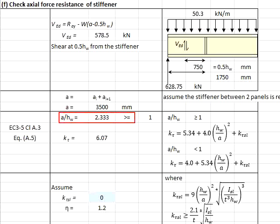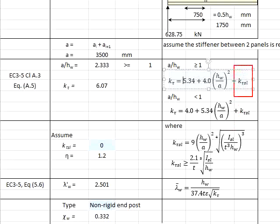We conservatively assume the stiffener doesn't contribute anything on here. Therefore, the k_ksl is considered to be 0.0. The k_knot is now found to be 6.07.